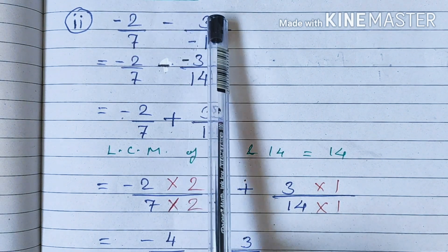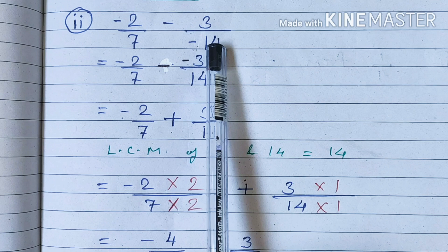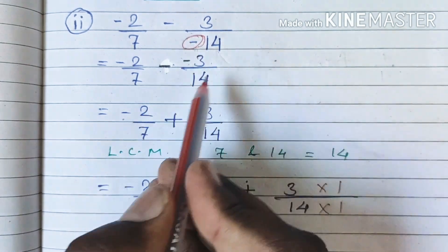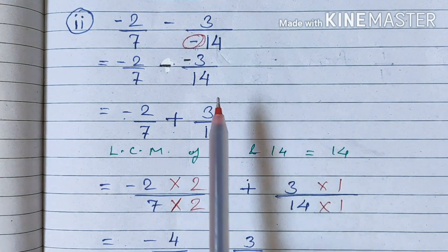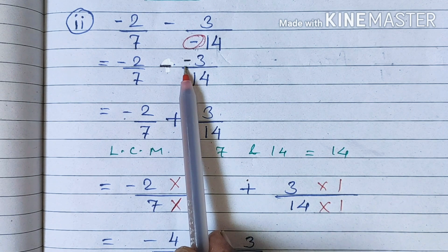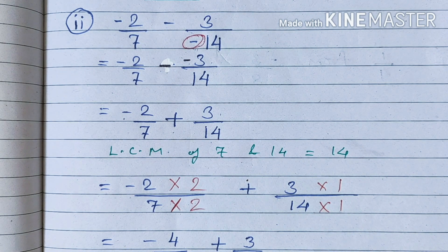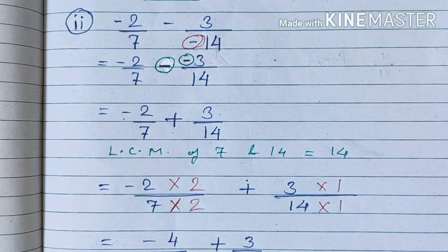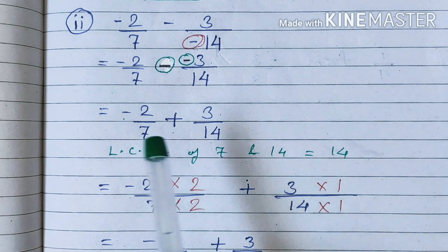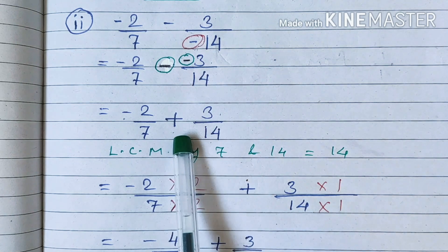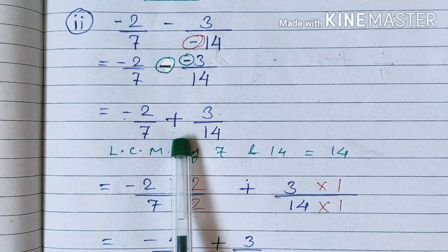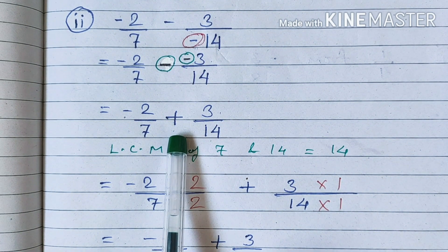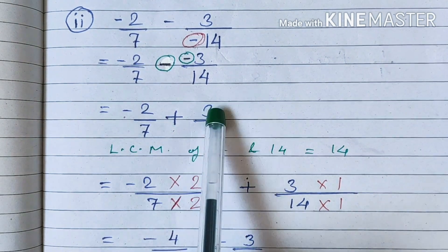The second part: minus 2 upon 7 minus minus 3 upon minus 14. The first thing we do is shift the minus sign to the numerator. Now when these two minus signs come together — minus and minus — they become a plus sign, because minus multiplied by minus is plus. So the first number remains the same, plus 3 upon 14.